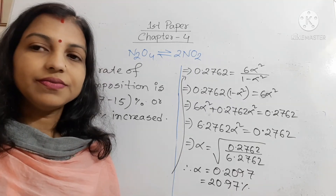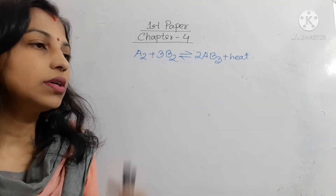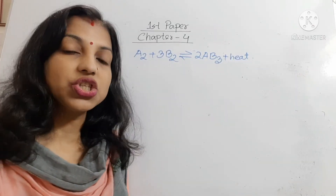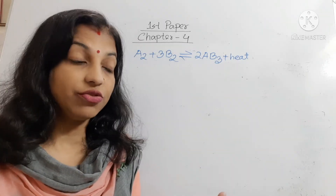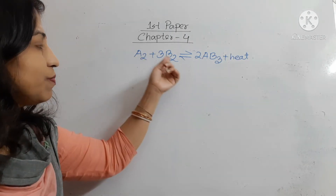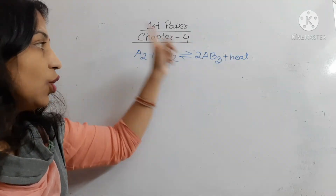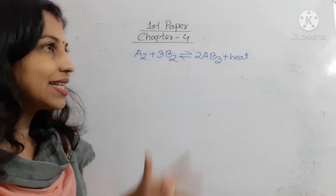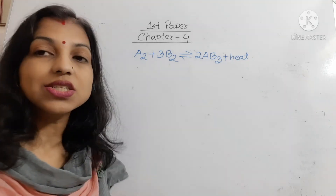Now our third question is: if the temperature and pressure of this reaction is changed at equilibrium, then what will be the change in the rate of production of AB3? First of all, you have seen that A2 + 3B2 ⇌ 2AB3 + heat. Plus heat means when the reaction goes forward, heat is evolved. So it is an exothermic reaction.